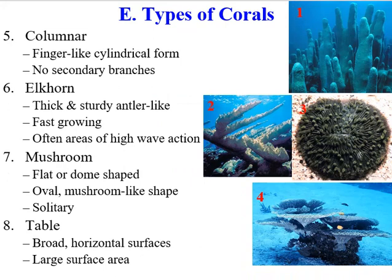Branching corals can withstand some wave action. There's also columnar — they look like columns. Elkhorn corals look like antlers of elk, similar to branching but a little more fragile, with increased surface area for light absorption. Then there are mushroom-shaped corals with a relatively big surface area that are pretty robust and can withstand strong wave action since they don't have little protruding parts that can be broken. Finally, there are table-like corals — big surface area, but delicate, so you'll find these in calmer water, not in areas with a lot of wave action.